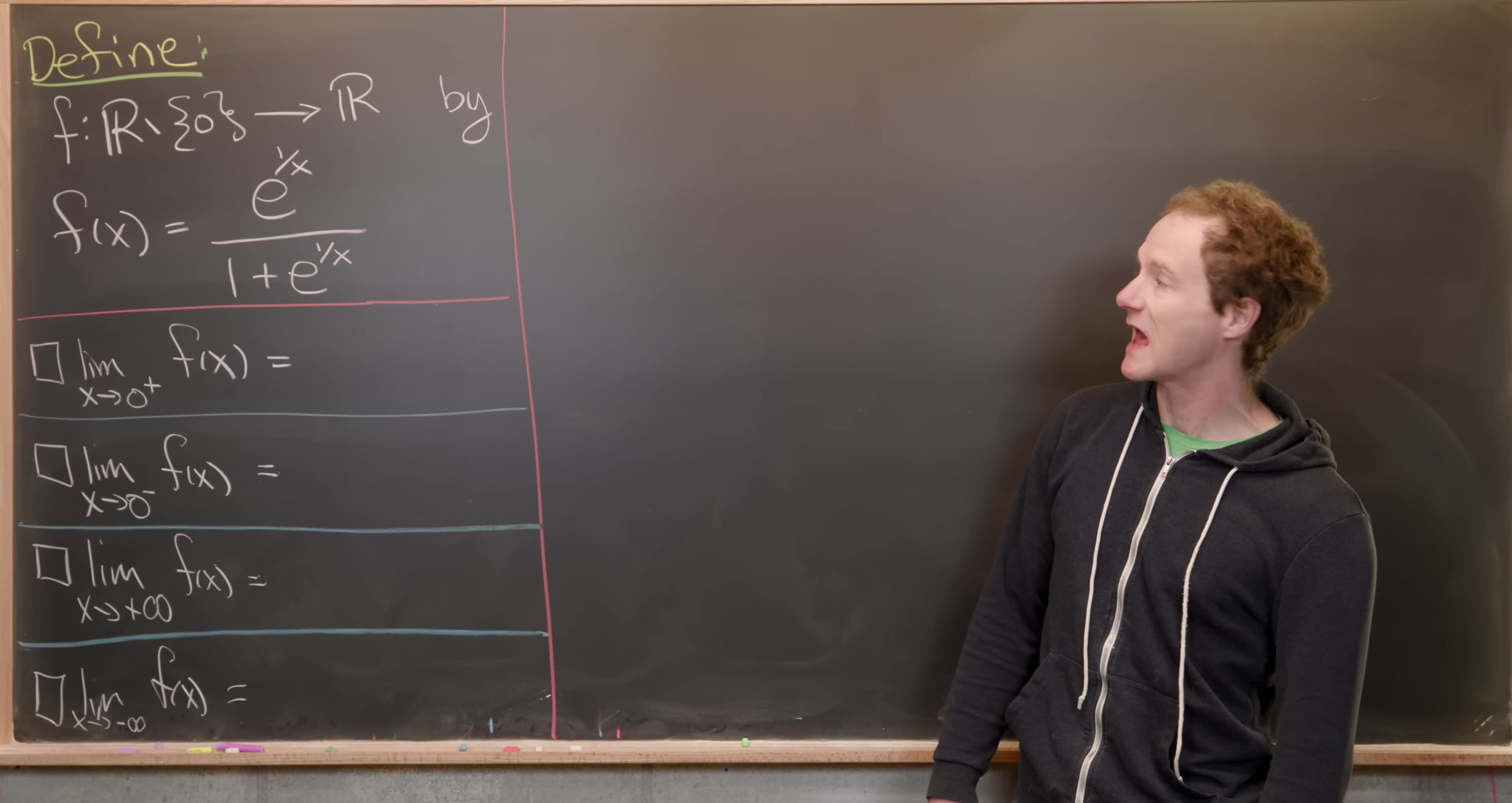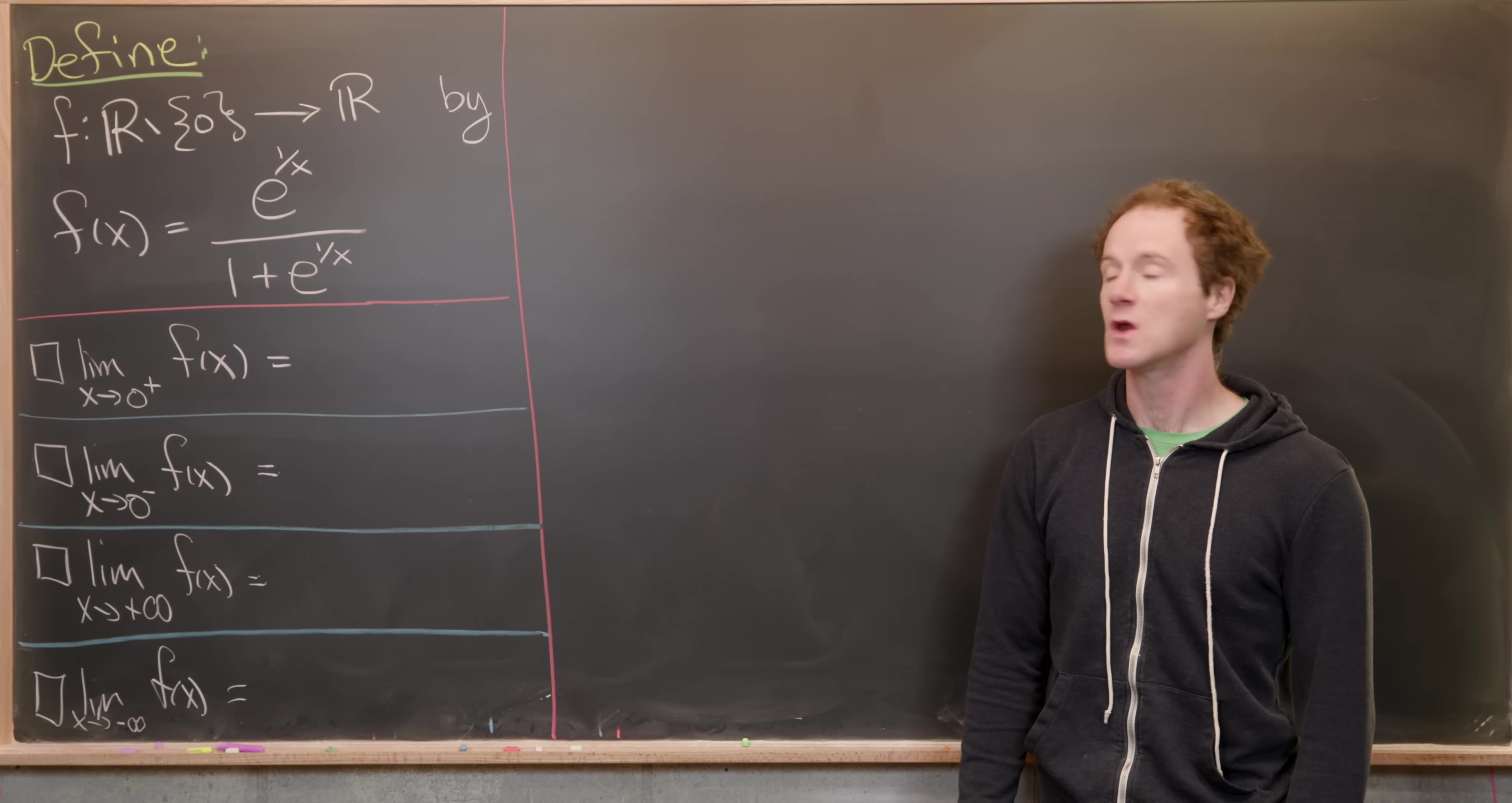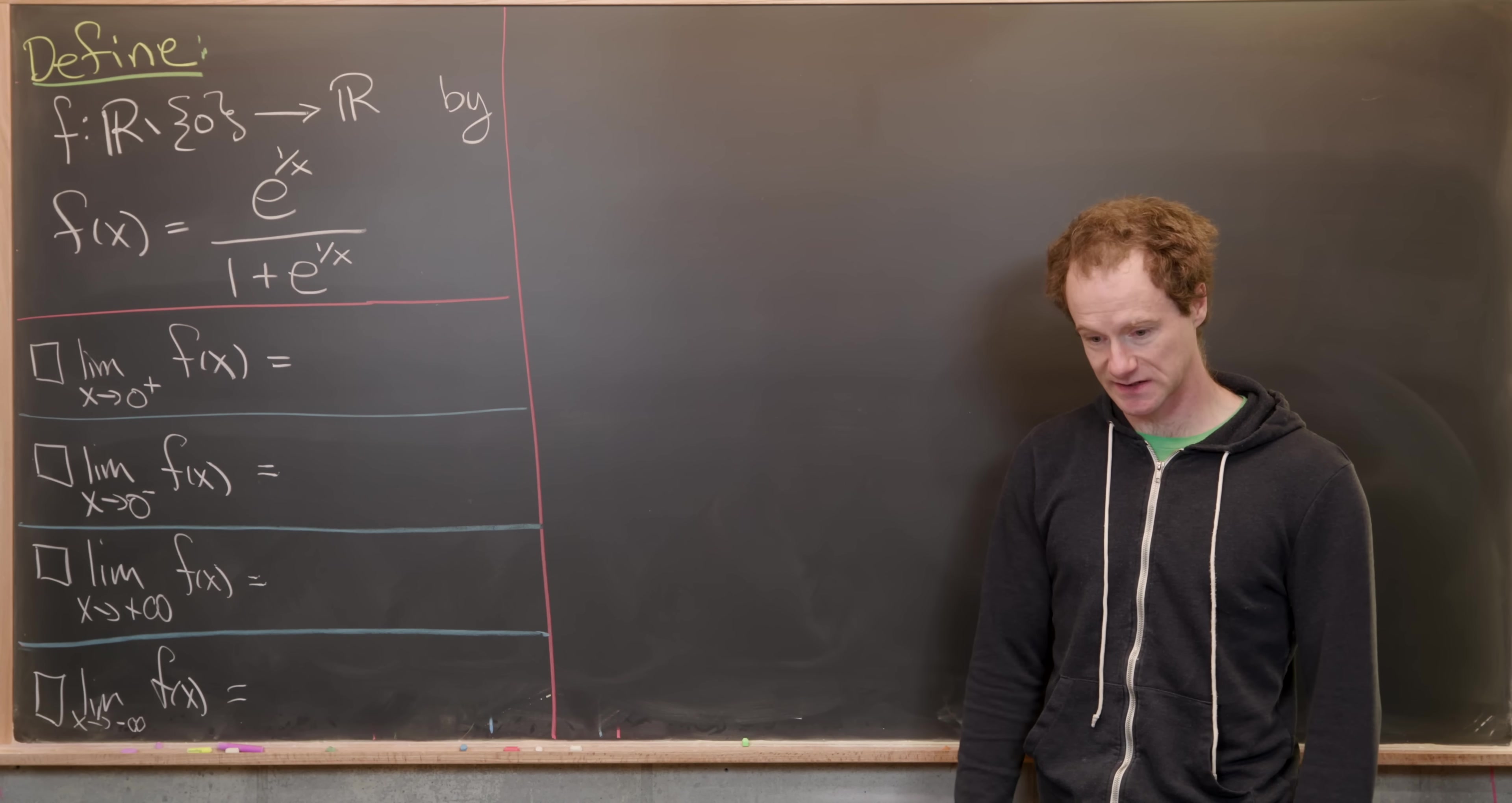We've got the function f from R minus zero, in other words that's all real numbers except for zero to R, and it's defined by f(x) equals e to the one over x over one plus e to the one over x. So notice that's most definitely not defined at zero. If we plug in zero, we get e to the one over zero, but that doesn't really make any sense.